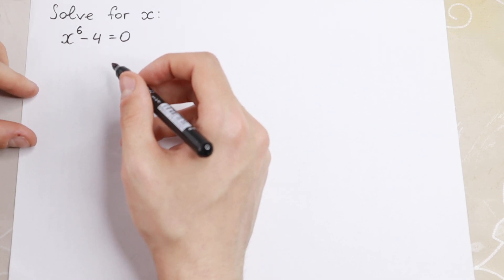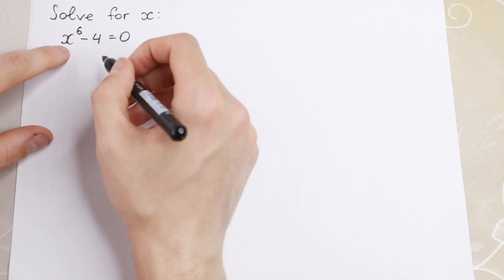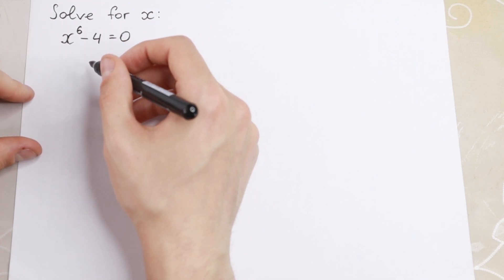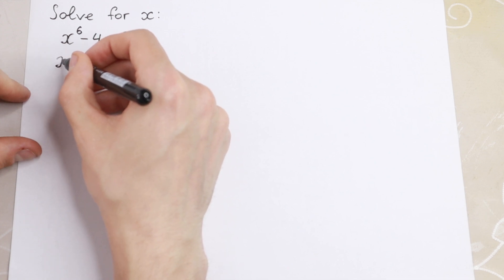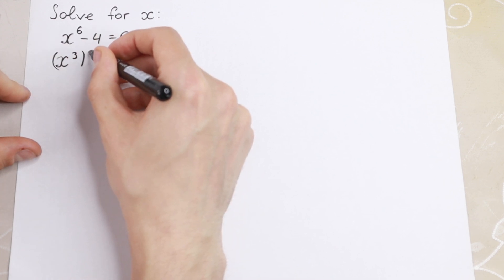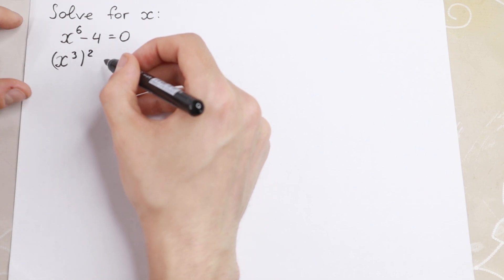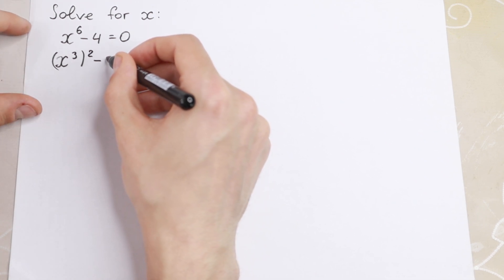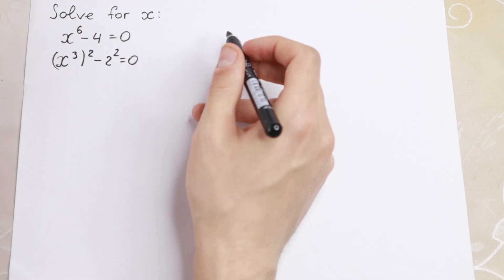Let's find all of the roots first. Let's write x to the 6th power as x cube to the second power, and write this 4 as 2 squared. So minus 2 squared equals 0.